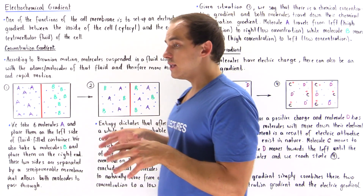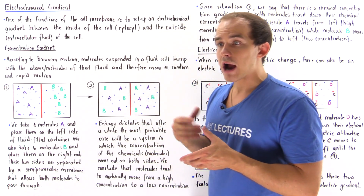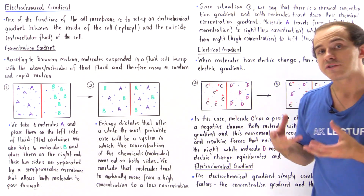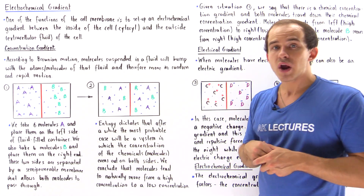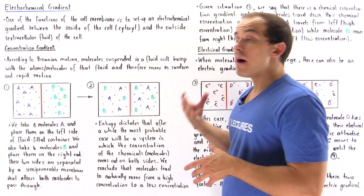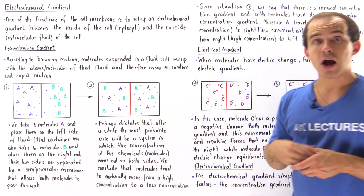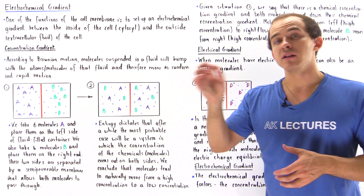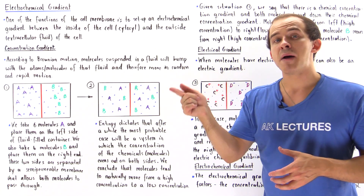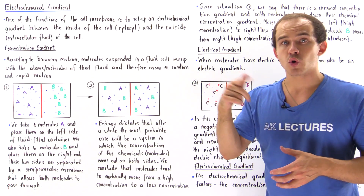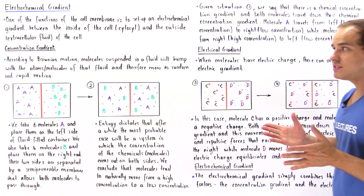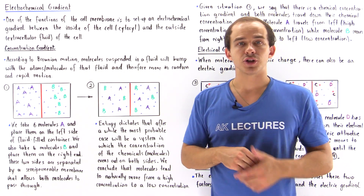One of the purposes of our cell membrane is to create an electrochemical gradient. There are different modes by which the cell membrane allows molecules or ions to pass through across it, and we'll discuss that in more detail in the next lecture.